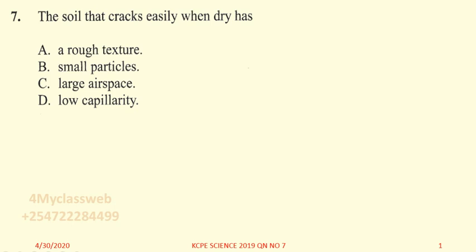Hello, once again we've got another chance of going through a science question. This question was tested in the KCP for the year 2019. Now this question will give us a chance of going through some of the work that was done in a previous class. Let us first of all read it: 'The soil that cracks easily when dry has...' — you can see this characteristic that we have here.